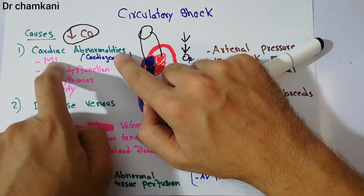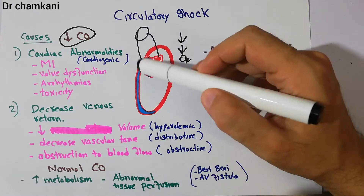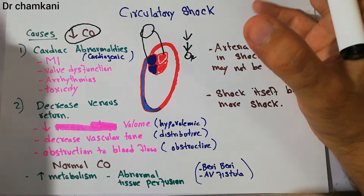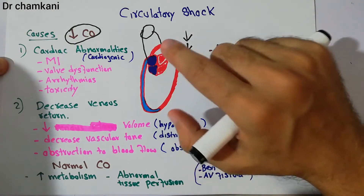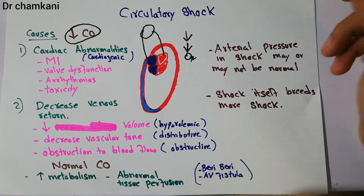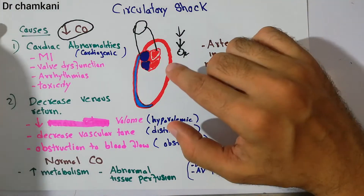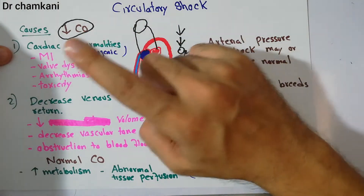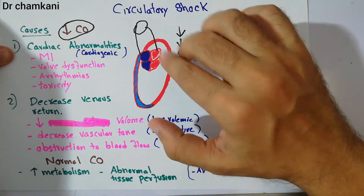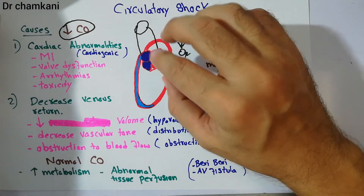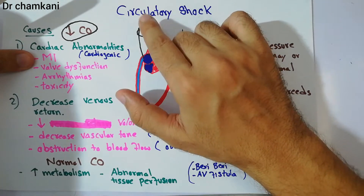The most common cause of cardiogenic shock is myocardial infarction, where a portion of the heart muscle gets damaged. The heart needs blood and oxygen for its own muscles. If the blood vessels supplying the heart muscles get damaged, the heart cannot fulfill the needs of the body. Myocardial infarction is therefore the most common cardiac problem leading to cardiogenic shock.